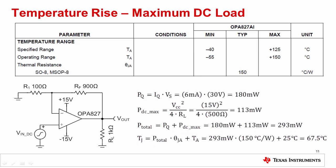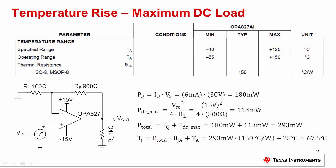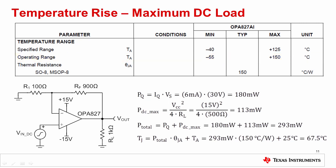This temperature rise can affect the performance of the device. For example, parameters such as offset voltage and bias current will shift over temperature. In fact, the specifications are only defined over the given specified temperature range of minus 40 to 125 degrees C. If the junction temperature moves outside of this range, none of the specifications are assured. The operating range indicates a wider range of minus 55 to plus 150 degrees C, under which the device will operate as an amplifier, but the specifications are not necessarily defined. In general, it is advised to stay within the specified temperature range to ensure best performance.